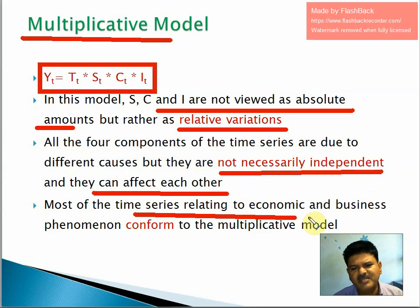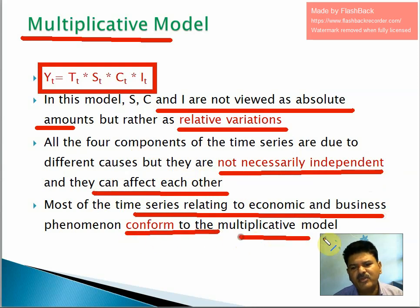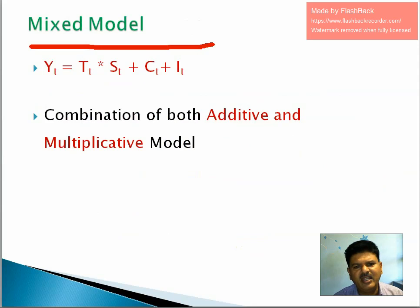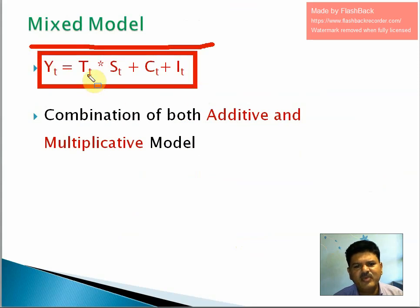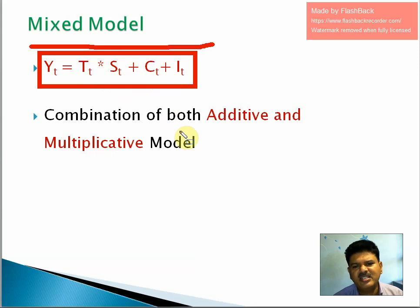Most time series relating to economic and business phenomena conform to the multiplicative model. The third model is the mixed model, which takes a combination of both additive and multiplicative models. In the mixed model, we multiply the trend value by seasonal variation — that is the multiplicative part — and then add C_t plus I_t, which is the additive part.